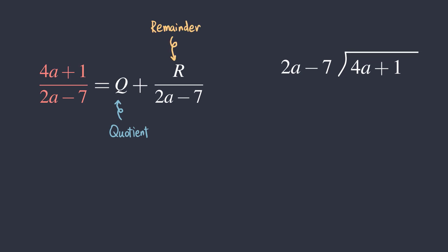Performing long division, we get a 2 here. Multiplying 2 by 2a minus 7, we get 4a minus 14. Next, doing the subtraction, we have negative 15 as the remainder.